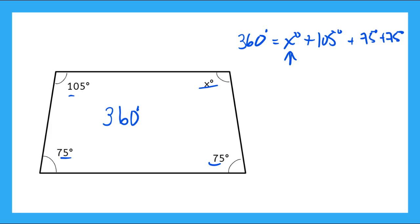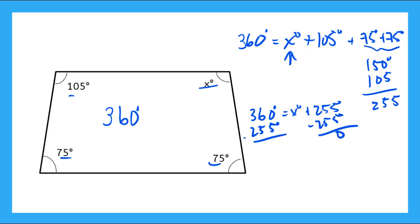And I need to solve for my mystery angle x. So let's add up the angles that I know. I know 75 plus 75 is 150 degrees. And 150 plus 105 is going to give me 255. So now I have 360 degrees is equal to mystery angle plus 255 degrees. So now if I subtract 255 from either side, I'm going to get, I need to borrow here, 5, 0, 1, I get my mystery angle is equal to 105 degrees.